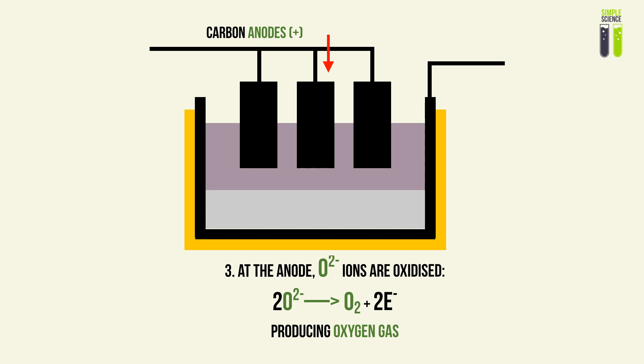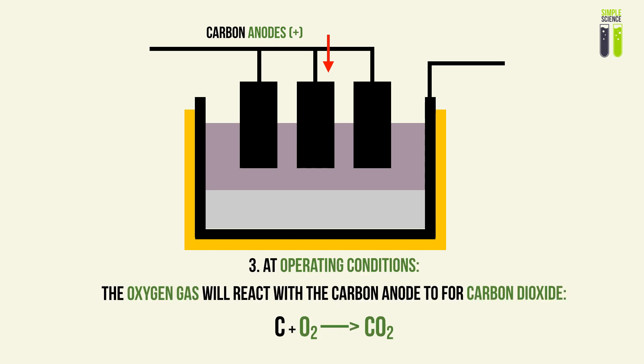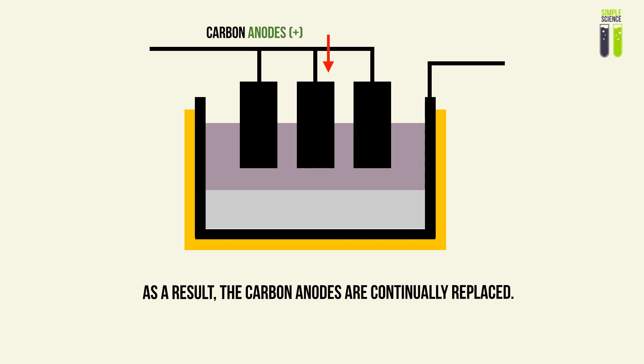At the anode, the O²⁻ ions are oxidized — they give up their negative charge. Two O²⁻ ions lose two electrons to form a diatomic molecule of oxygen gas. However, at the operating conditions of the anode, which is very hot and possibly at high pressure, the oxygen gas immediately reacts with the carbon of the anode to produce carbon dioxide. So a byproduct of this process is carbon dioxide. As a result of oxygen reacting with the carbon anodes, the anodes wear away and must be continually replaced.